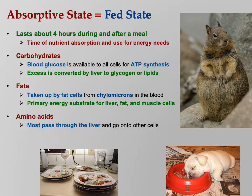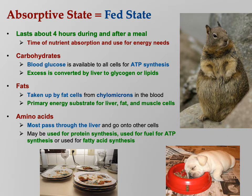Amino acids pass through the liver before they go on to other cells. They're the building blocks of proteins, so the amino acids in the blood can be taken in by cells and used to make whatever proteins they need. Cells are always making proteins — they need amino acids to do that. Amino acids can also be used for ATP synthesis or for fatty acid synthesis. Your body is very versatile — if you don't have enough of a particular nutrient, it can convert one to another.